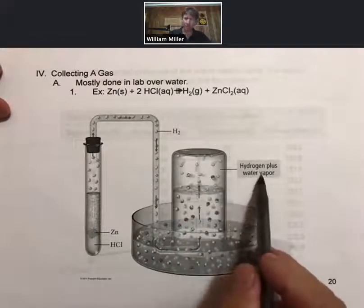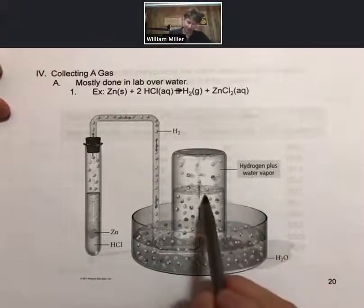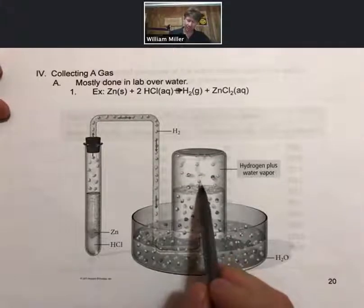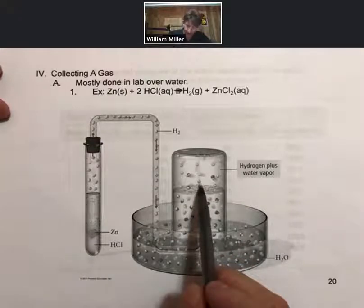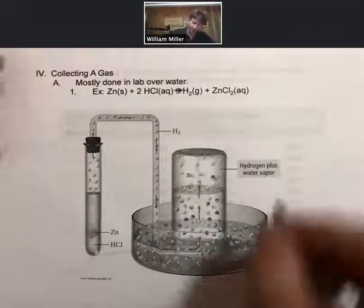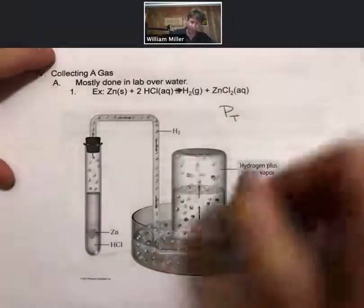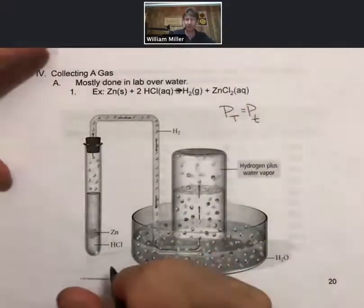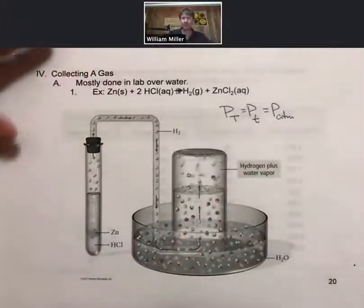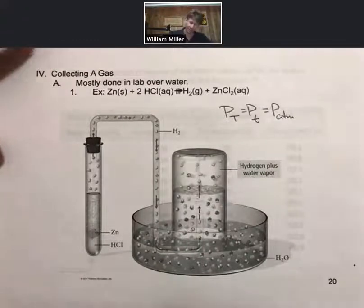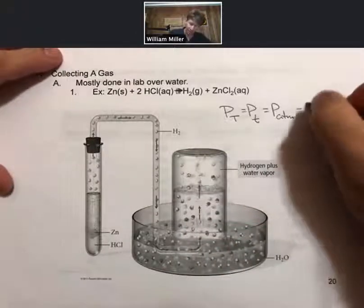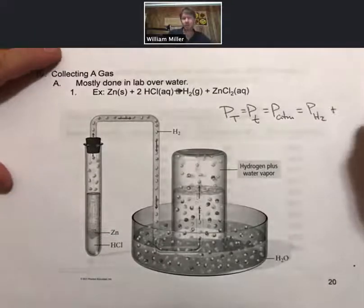When you do, the gas that's here is hydrogen, but it's also got some water vapor. The water vapor comes about because there's water creating the lower surface for the collection, and some of that water evaporates. It's a little hard to see, but some of these molecules are hydrogen molecules H2, and some of them are water molecules. Now the overall equation is that P total, sometimes called P lowercase t, also called P atmospheric, is going to be equal to the sum of the partial pressures of the gases inside here, which is partial pressure of hydrogen plus partial pressure of H2O.